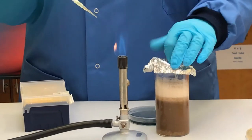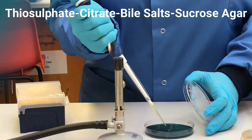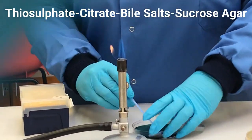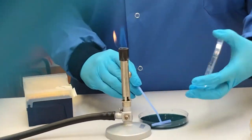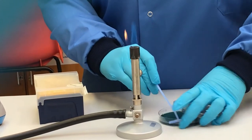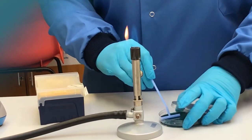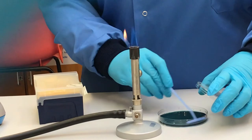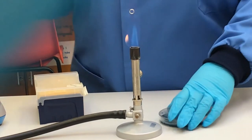But this time you should plate with thiosulfate citrate bile salts sucrose agar, also known as TCBS agar. This agar is used to isolate Vibrio species and is highly selective for Vibrio cholerae and Vibrio parahaemolyticus.